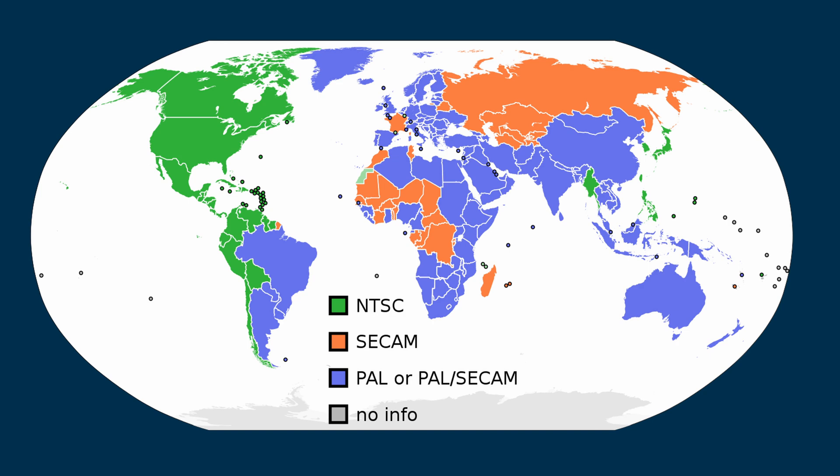A lot of you told me in the comments that there are PAL countries and NTSC countries. And because I live in a PAL country — which means that the power frequency in my country, Belgium, is 50 hertz — I should set my camera to PAL mode and shoot in 25, 50 or 100 frames per second. Because if I don't, then lights or screens might flicker.